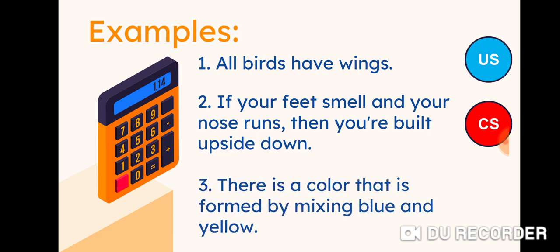Number three: there is a color that is formed by mixing blue and yellow, which is only true for the shade of green. Therefore, this statement is considered an existential statement. As you can see, a universal statement usually involves the word 'all,' a conditional statement involves 'if...then,' and an existential statement usually involves the phrase 'there is.' Those are the clue words to identify the type of statement.